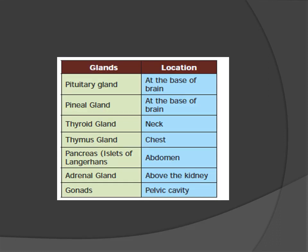Glands and their locations: pituitary gland — base of brain; pineal gland — base of brain; thyroid gland — neck; thymus gland — chest; pancreas — abdomen; adrenal gland — above the kidney; gonads — pelvic cavity.